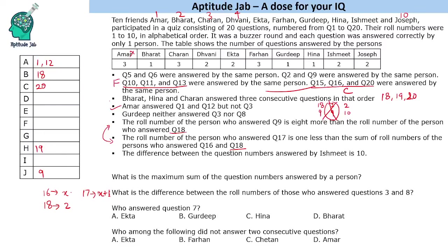So we fill: Charan answered questions 15, 16, and 20; Farhan answered questions 10, 11, and 13. Now we know the value of X: since Charan (roll number 3) answered question 16, X = 3. Therefore question 17 will be answered by roll number X+1 = 4, which is Dhvani. So Q16 = Charan and Q17 = Dhvani.